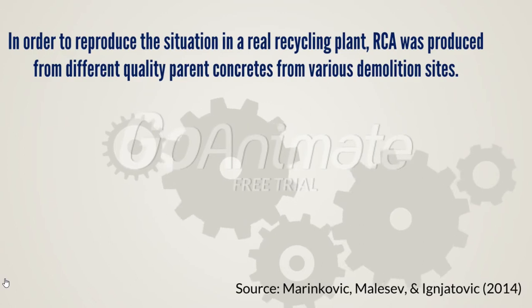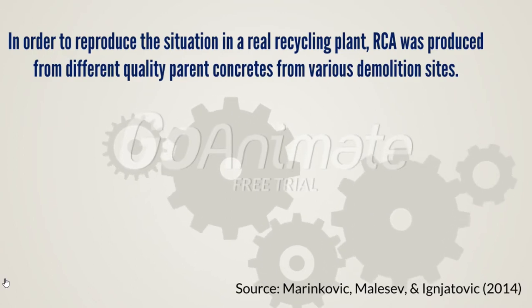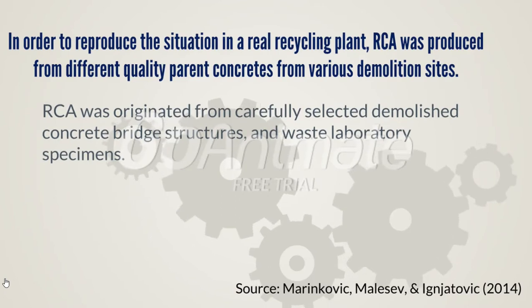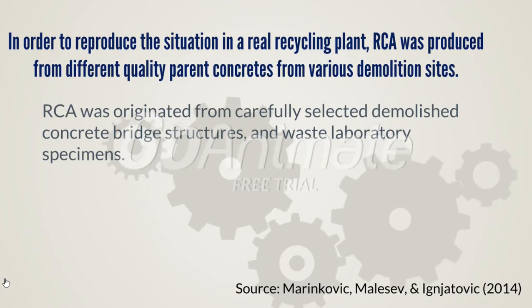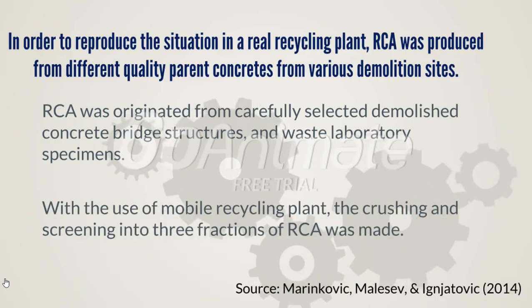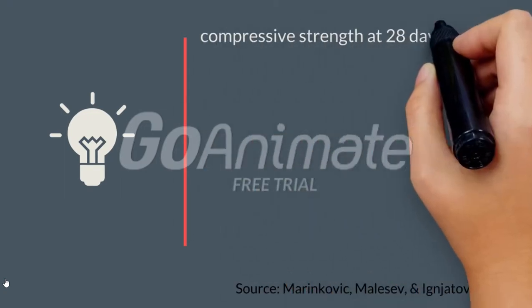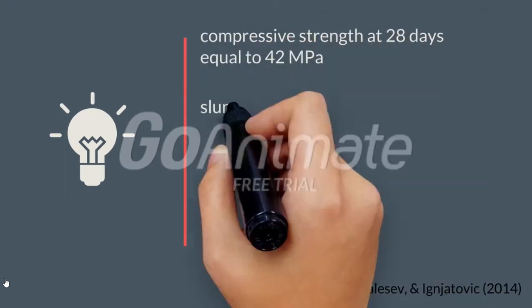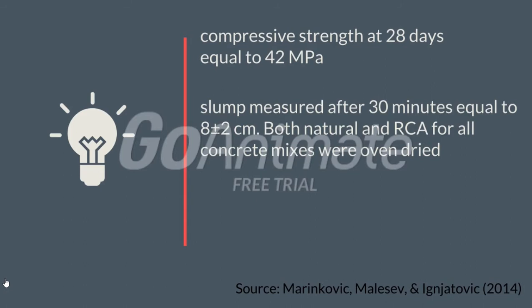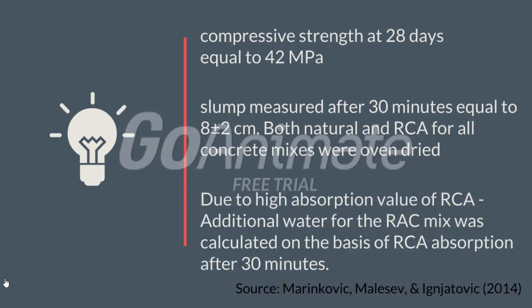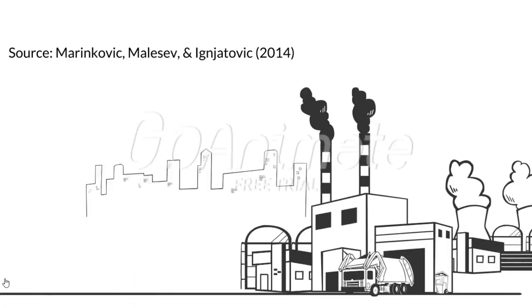In order to reproduce the situation in a real recycling plant, RCA was produced from different quality parent concretes from various demolition sites. RCA was originated from carefully selected demolished concrete bridge structures and waste laboratory specimens. Using a mobile recycling plant, the crushing and screening into three fractions of RCA was made. Target property values for all concrete types were: compressive strength at 28 days equal to 42 MPa, and slump measured after 30 minutes equal to 8 ± 2 cm. Both natural and RCA for all concrete mixes were oven dried due to the high absorption value of RCA. Additional water for the REC mix was calculated on the basis of RCA absorption after 30 minutes. The following are the mix proportions and properties of NAC and REC used in the study.